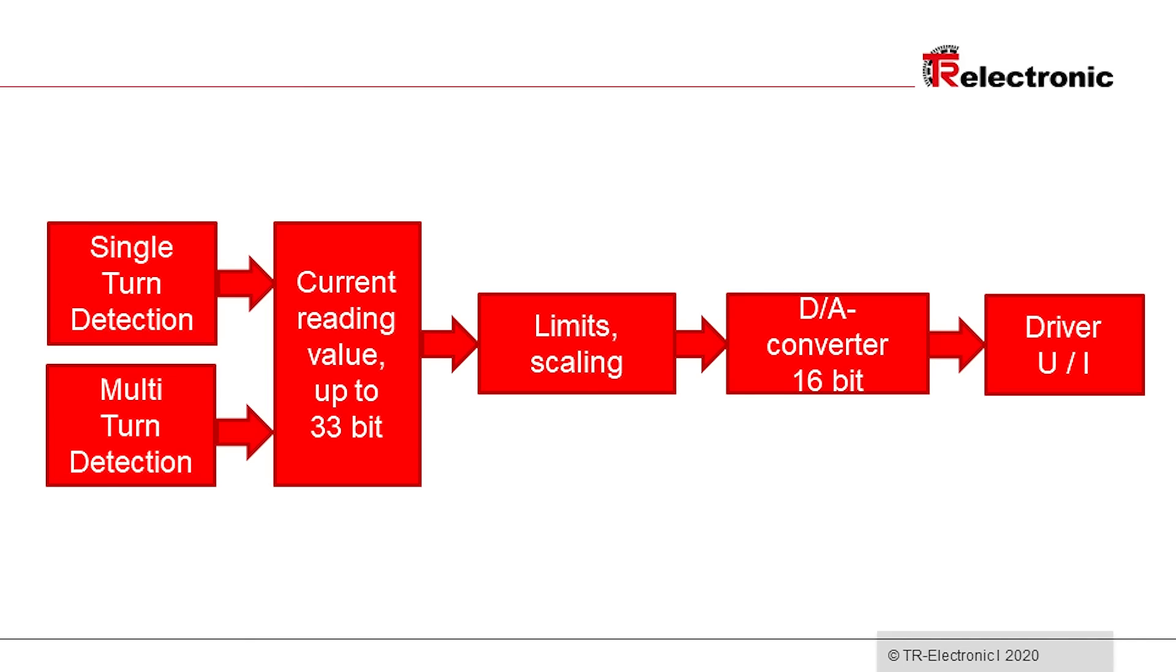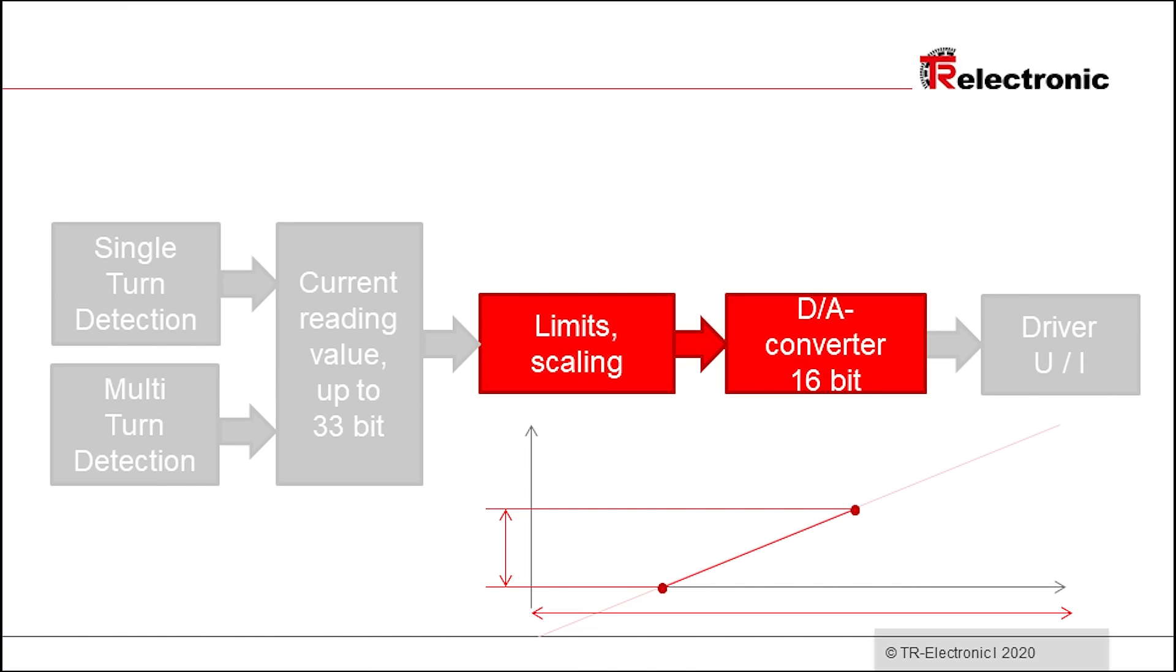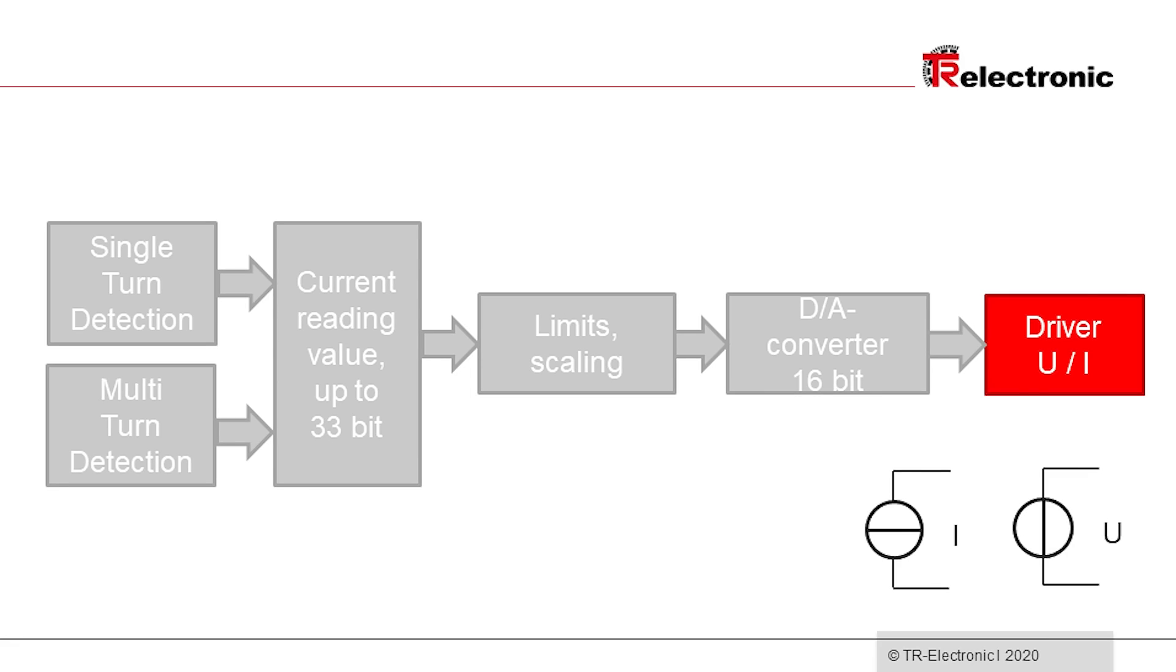Before we continue to configure the encoder, let's take a look at its functional diagram. The rotation of the shaft is sampled by the detection system and is translated into an electronic signal. The signal is scaled to the desired output range, and the resulting digital value is converted to an analog signal by a 16-bit digital to analog converter. The output driver takes the signal and provides the desired voltage or current to the output.